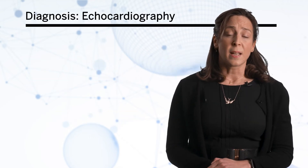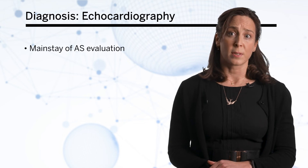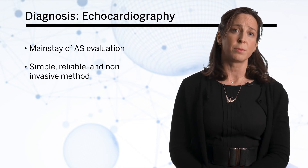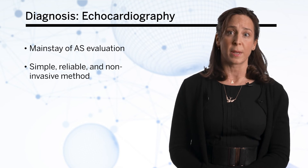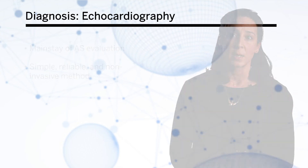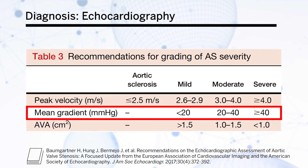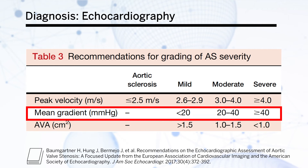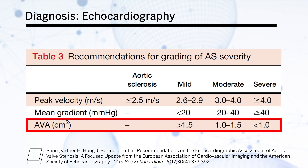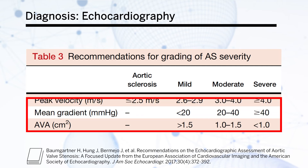Echocardiography is now the mainstay of aortic stenosis evaluation, and it offers a simple, reliable, and non-invasive method to follow patients. Three main echocardiographic parameters used to grade the severity of AS are listed in the chart. These include peak transaortic velocity, mean transaortic gradient, and aortic valve area, which can be calculated using the continuity equation.